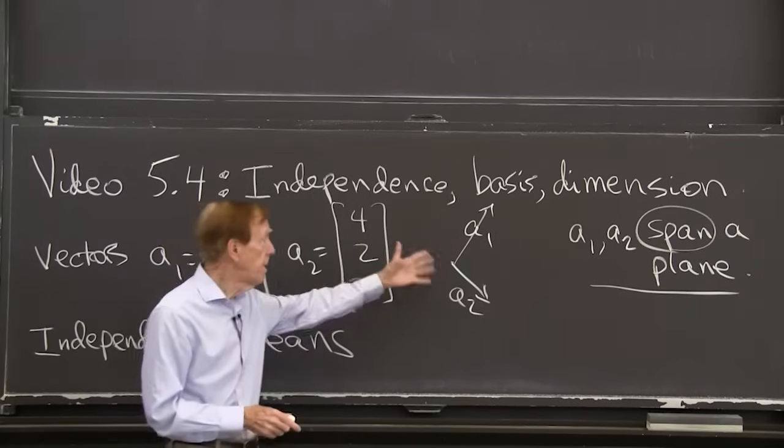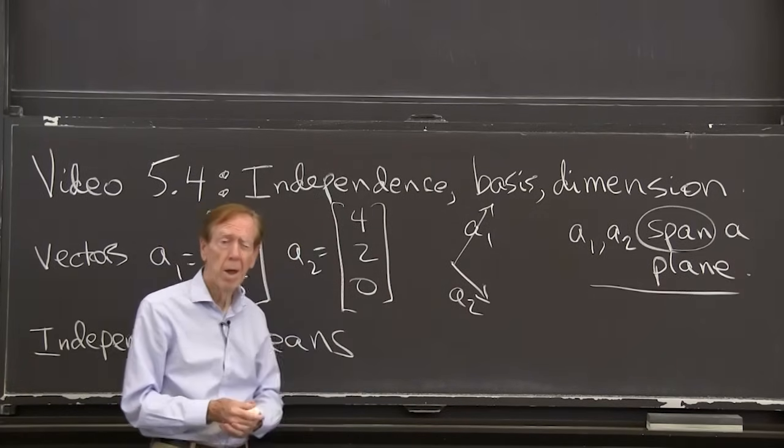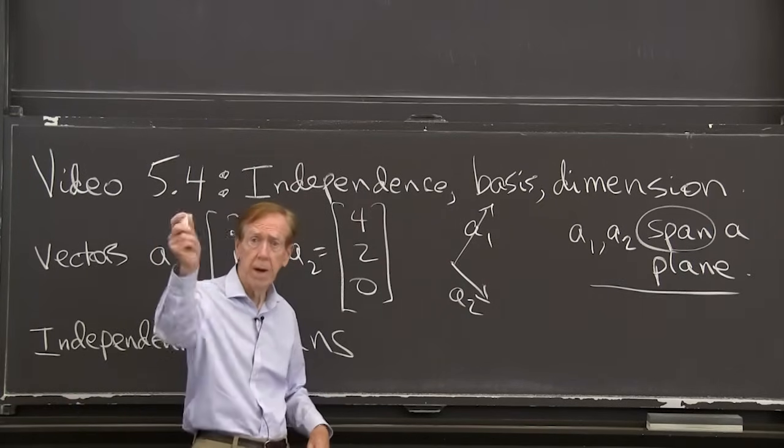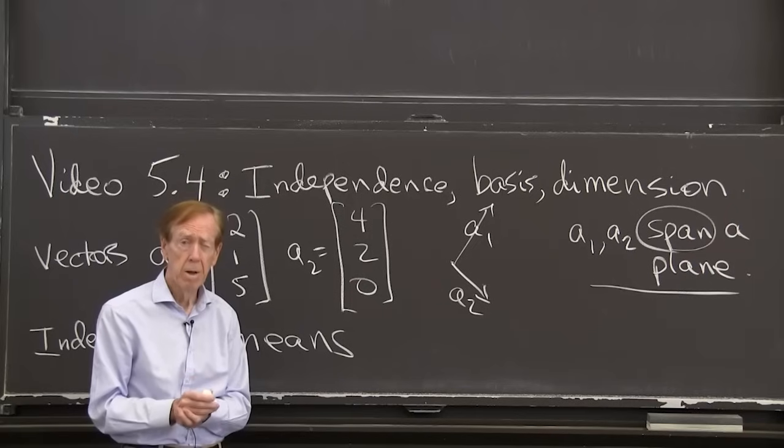And also, they're independent. I need them both. If I throw away one, I would only have one vector left, and it would only span a line.